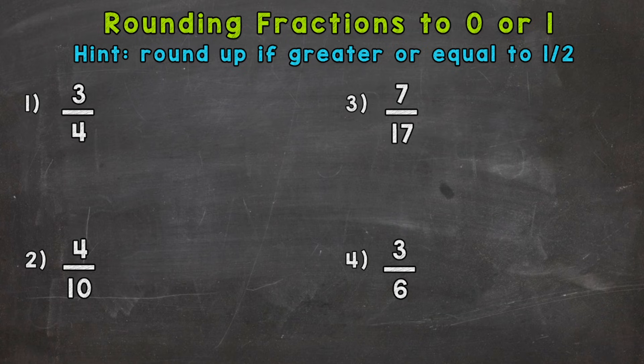So let's jump into number 1, where we have 3 fourths. Now, the most important part of this video is this hint up here. If a fraction is greater or equal to a half, it rounds up to 1. If it's less than a half, it will round to 0. So think about what's half of 4. How many fourths? Well, 2 fourths is half. So if we have 3 fourths, that's greater than a half, and 3 fourths is closer or would round to 1 whole.